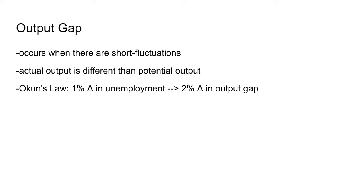The output gap is the difference between actual output and potential output, and you have an output gap during short-run fluctuations like recessions or expansions. An important concept here is Okun's Law, which states that a one percent change in unemployment corresponds to a two percent change in the output gap.